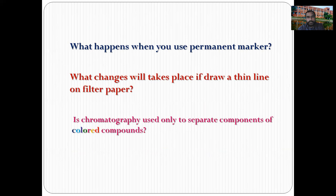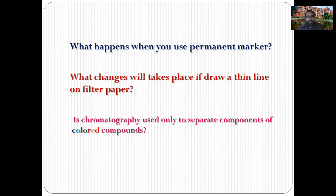What happens when you use a permanent marker instead of a non-permanent marker? With a permanent marker, the ink components are strongly adsorbed onto the filter paper, so they do not rise along with the solvent, making separation difficult. What changes occur if you draw a thin line on the filter paper? If the line is very broad, less separation is observed; if the line is fine and thin, better separation of color pigments is observed.